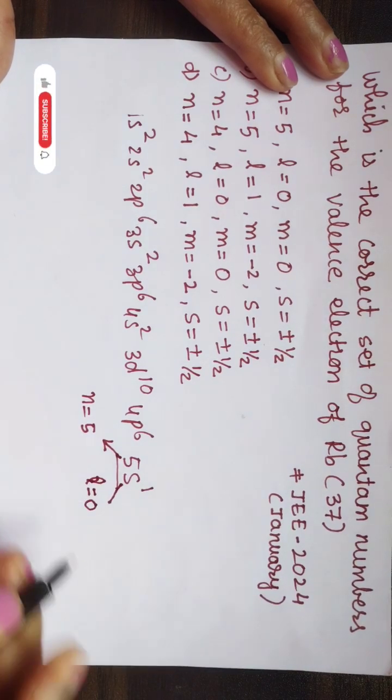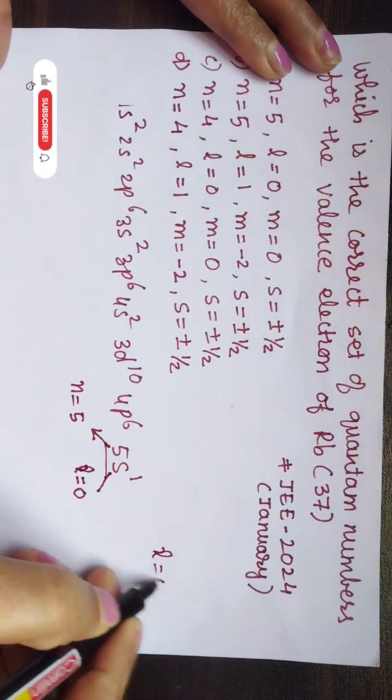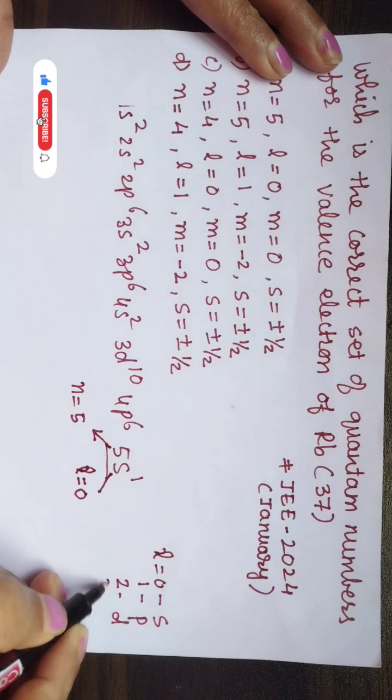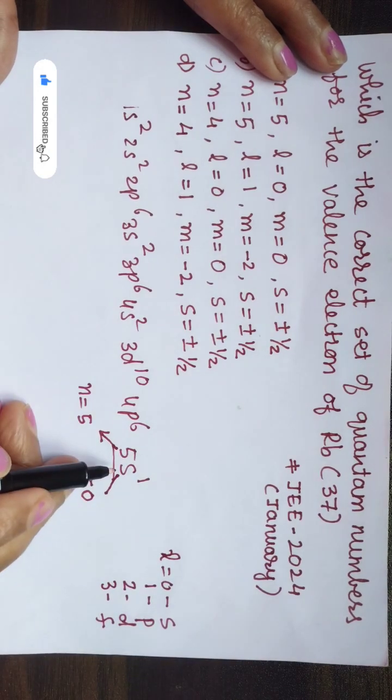Because when l is equal to 0, it is the s subshell. When l is 1, it is the p subshell. When it is 2, it is the d subshell, and when it is 3, it is the f subshell. So here the electron is going in s subshell, therefore l is equal to 0.